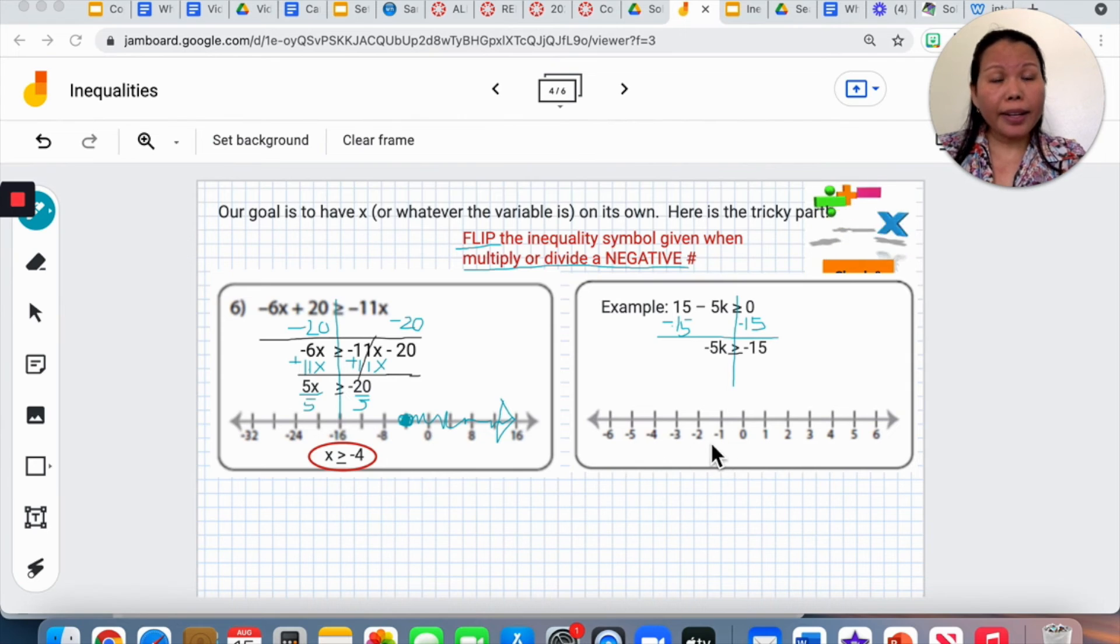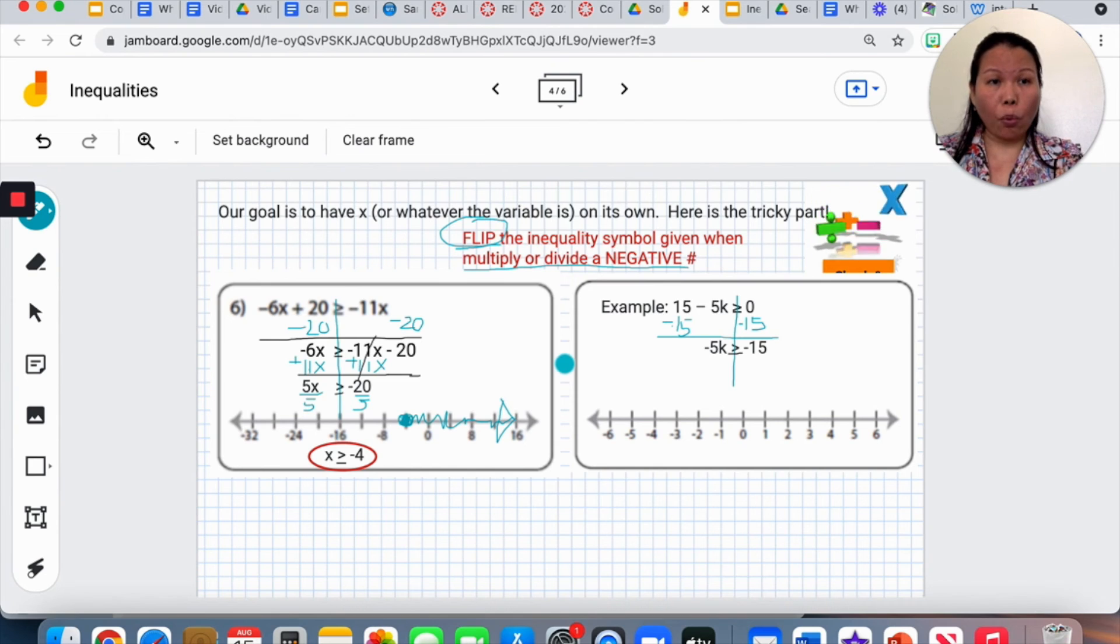I will be left with negative 5K greater or equal to negative 15. If I only add or subtract, the sign will not flip. It stays the same. This is where the next part will apply.